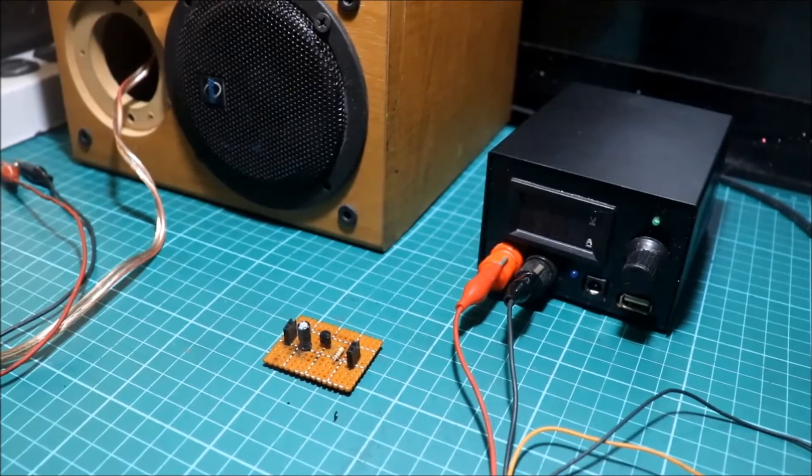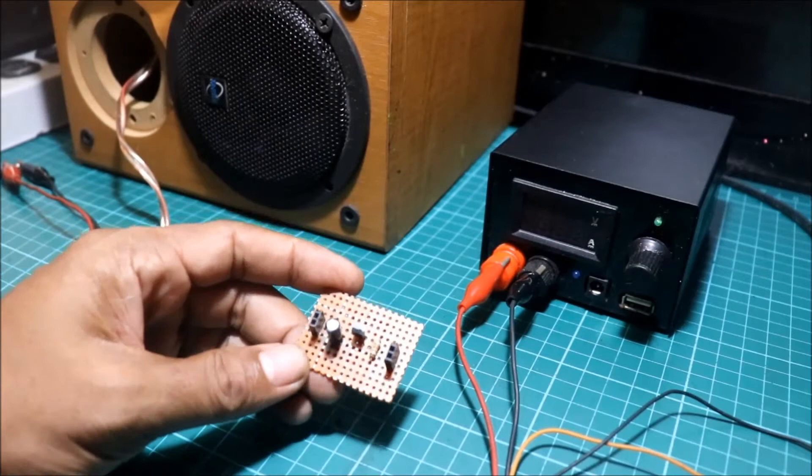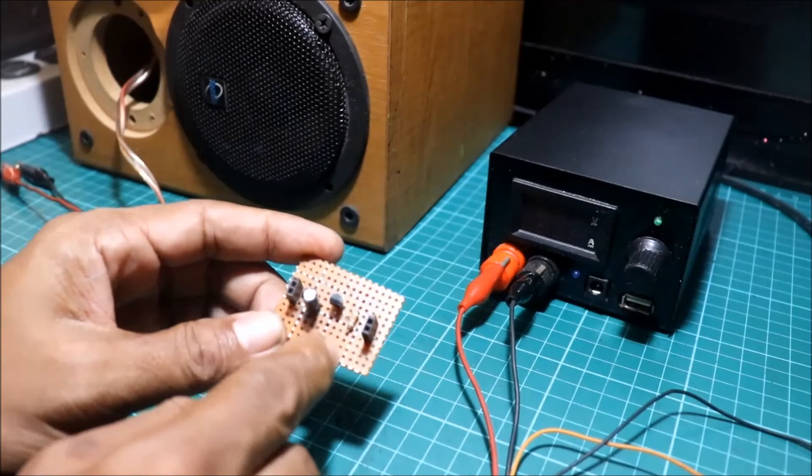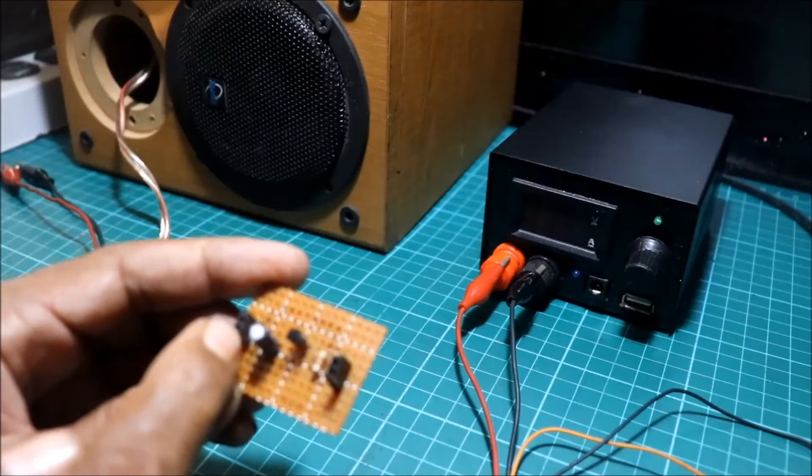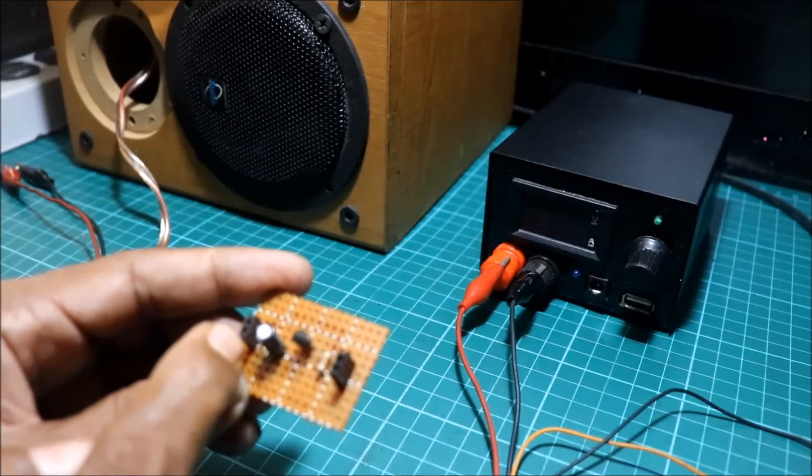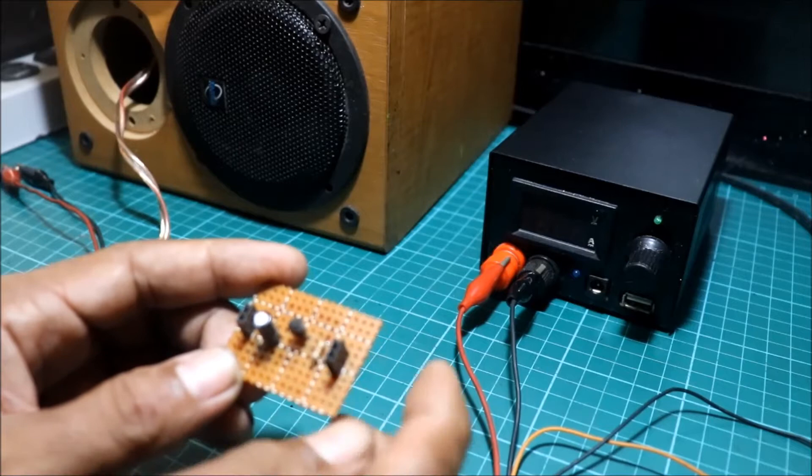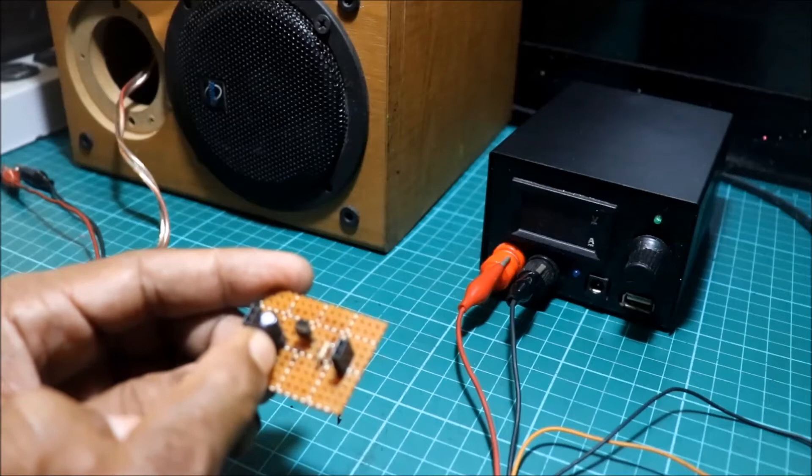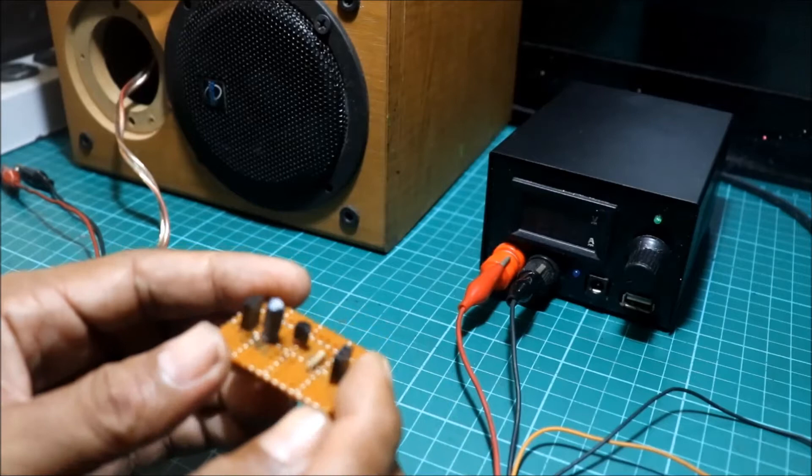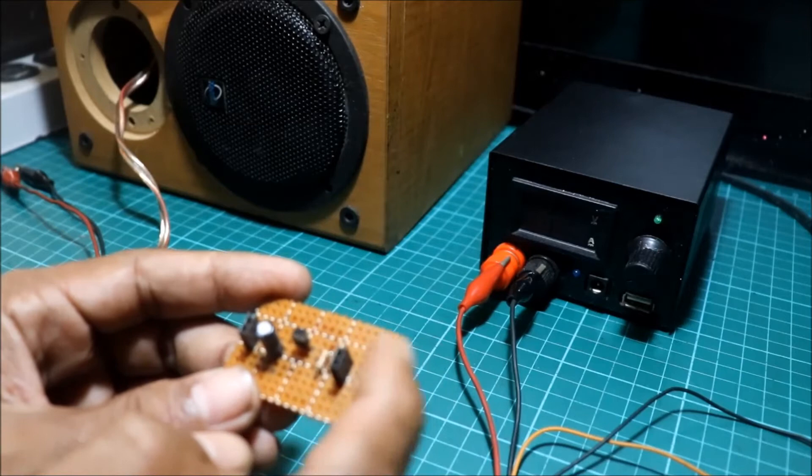Dito, ito yung module natin. Ginawa ko. Ito, perf board. Uli brown. May dalawang pin header. Female. Itong isa para sa voltage supply. At itong isa para sa speaker. At dito, meron ditong isang capacitor, transistor, at saka resistor. Medyo low cost yung ginawa natin. Kasi yung audio out, pin header lang.